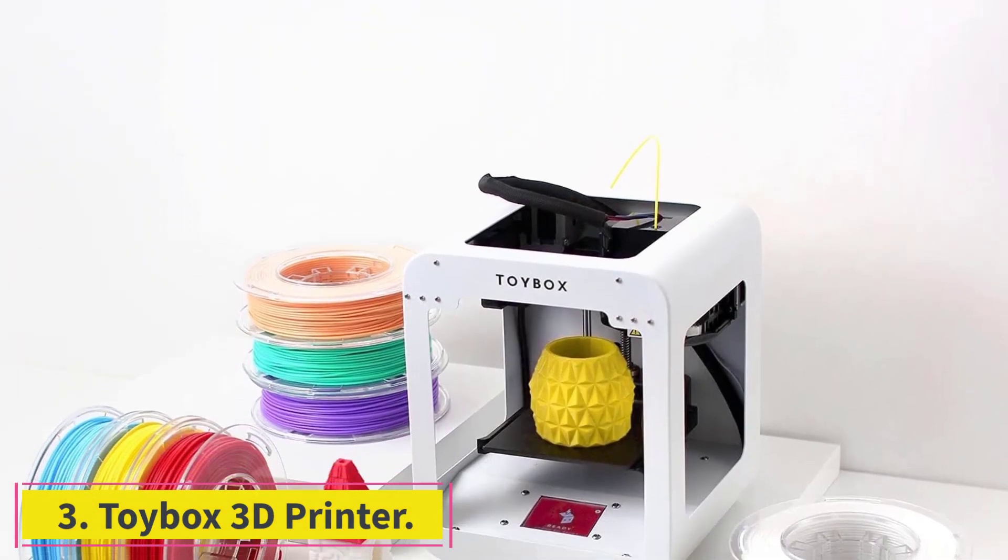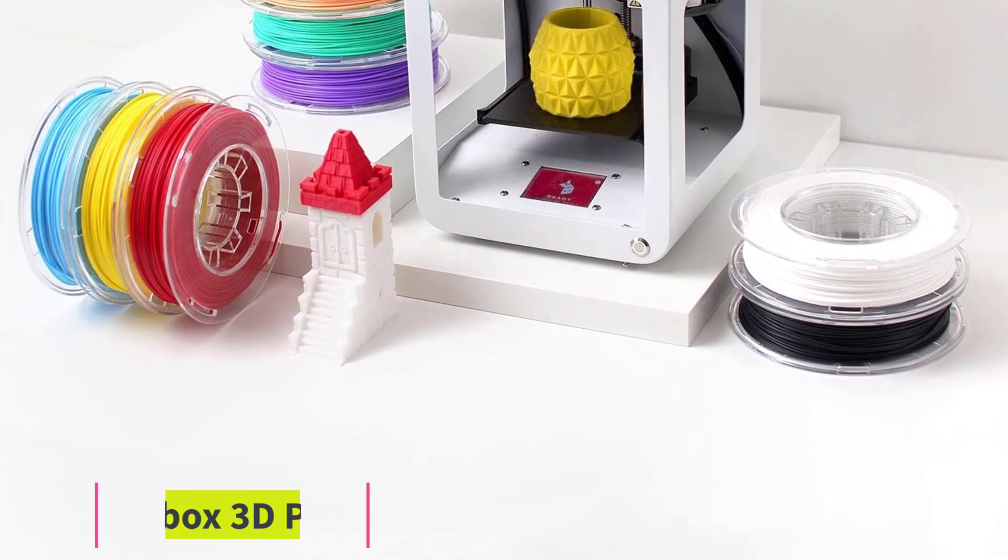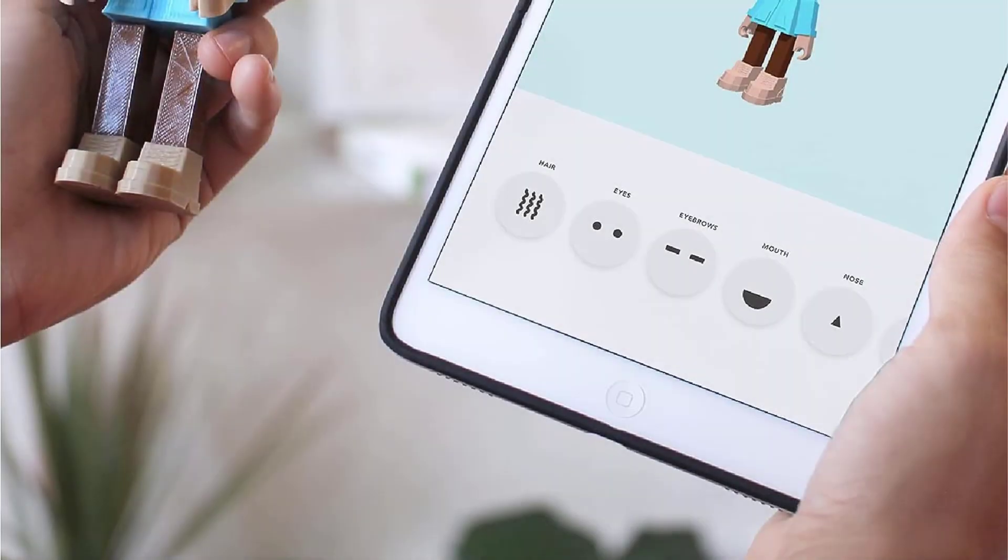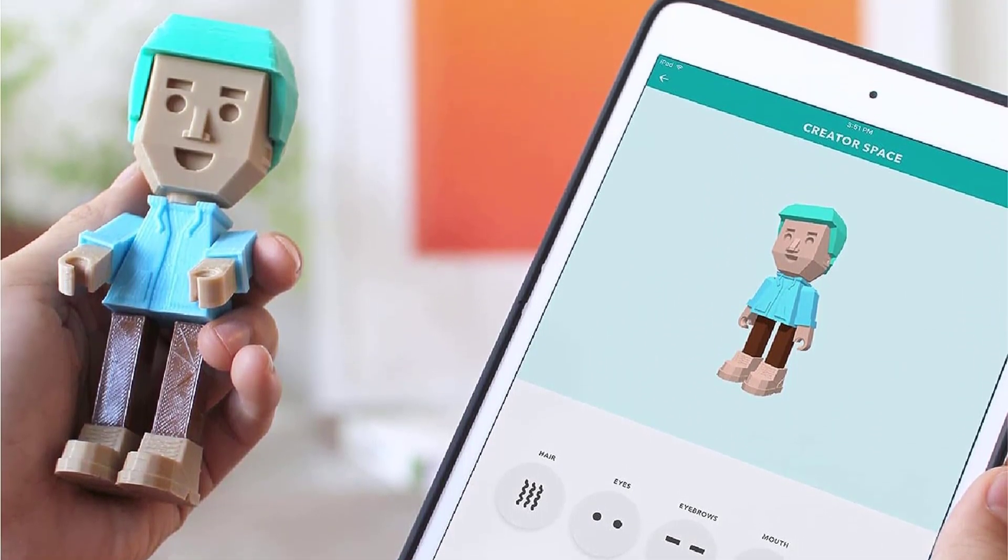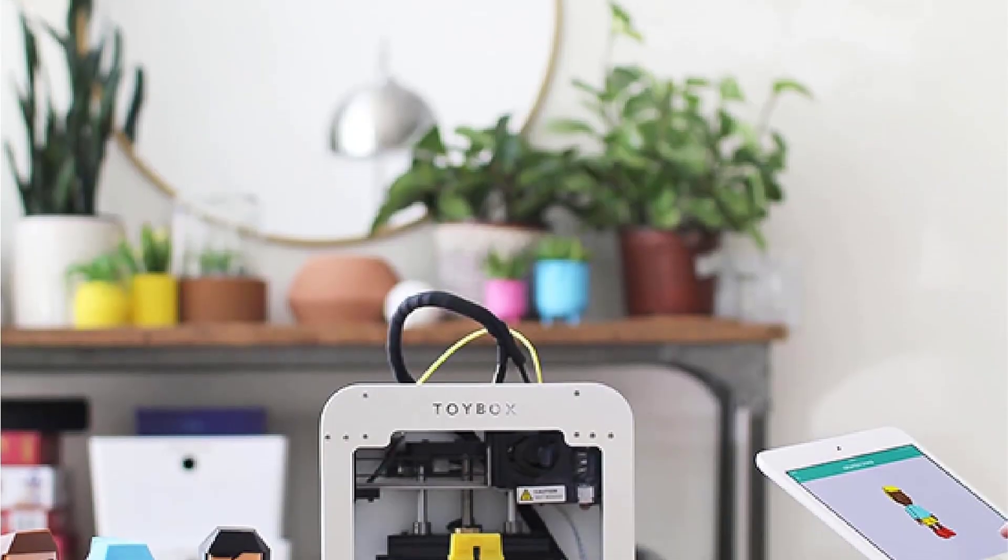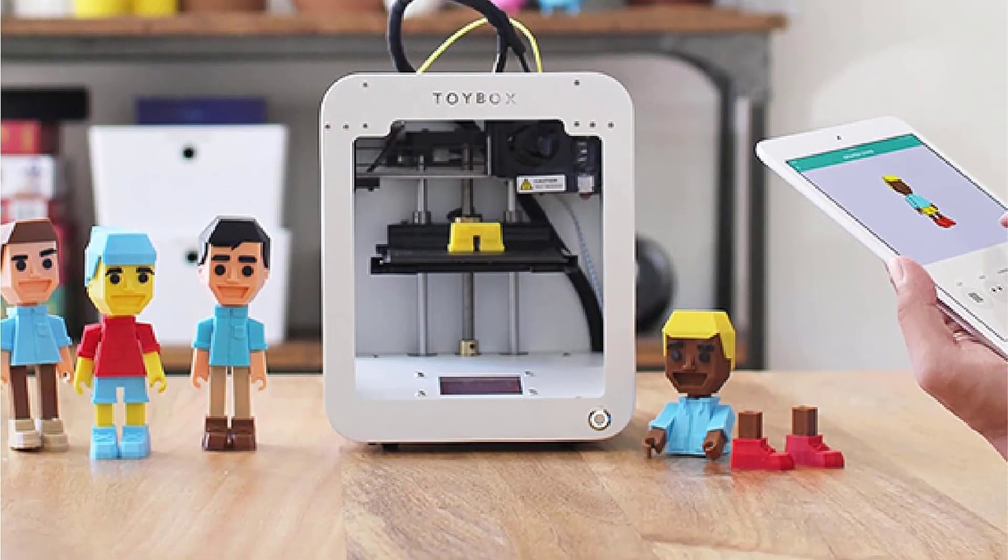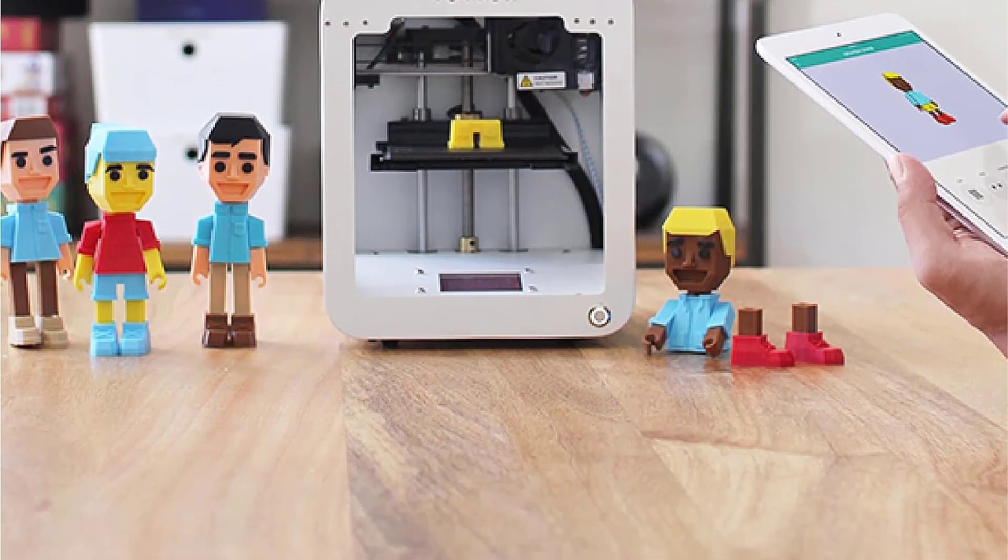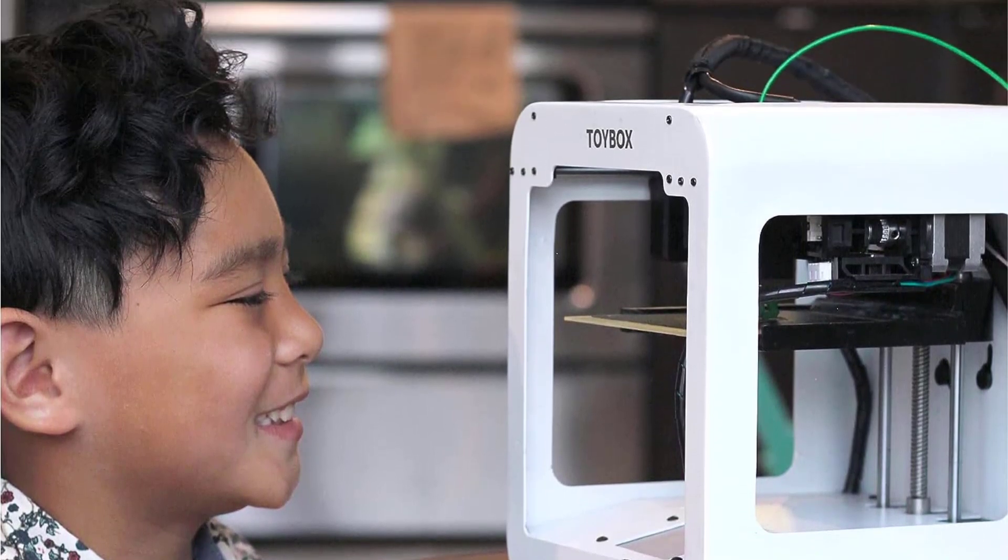At number three, Toybox 3D Printer, ideal for children who want to try their hand at 3D printing. ZDNet says the easy one touch control makes it sufficient for younger children, especially with its WiFi connection. No adjustments are needed while it runs, and the small size makes it easy to handle. Plus, thousands of toys are available within the Toybox catalog to keep your child busy for weeks to come.